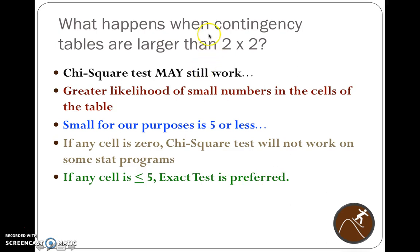Now, when you have these contingency tables that are actually not two-by-two tables, they're larger, the chi-square test can still work, but there's a greater likelihood that you'll have small numbers in the cells of the table. So for our purposes, if we have five or less in any of the cells in the table, we're probably not going to want to use the chi-square test.